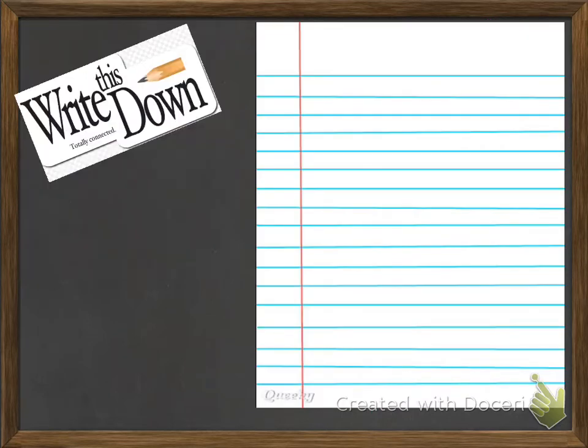Now our next one is where you're going to have to write this down. So I want you to turn to the next available page in your composition notebook. We're going to start by writing the title on the top of your paper. Please write Least Common Multiple and in parentheses LCM.